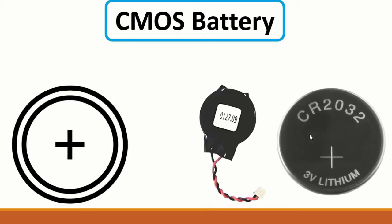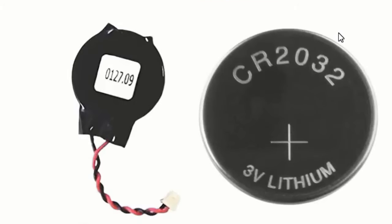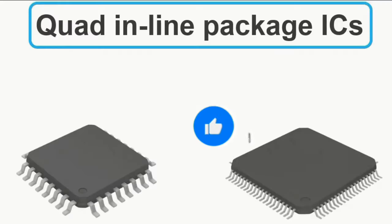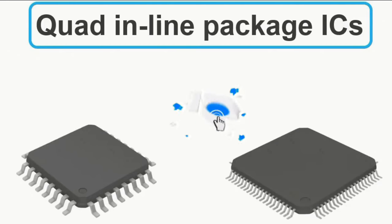Then we have the CMOS battery - Complementary Metal Oxide Semiconductor. For computers, always use the part number CR2032 for the CMOS battery - do not use other codes.